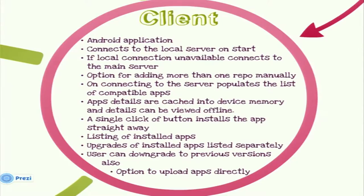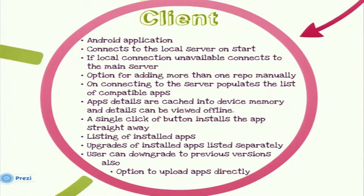The user can also manually add other repositories. App details that are downloaded are cached for offline viewing, but the user needs to be online or connected to the local server to actually install apps; otherwise they can only view the details. A single click of a button installs the app, and there is a separate list of installed apps. Apps that have upgrades are listed in yet another list. One unique feature is that users can also downgrade to previous versions of currently installed apps, and there is an option to upload apps directly from the client.